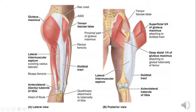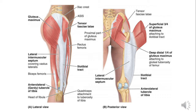From the inner side of the iliotibial tract, a lateral intermuscular septum arises and attaches to the lateral lip of the linea aspera. This septum, along with the medial and posterior intermuscular septa, divides the thigh muscles into compartments. So gluteus maximus attaches to the gluteal tuberosity directly, and through the iliotibial tract it also connects to the linea aspera and to Gerdy's tubercle on the tibia.